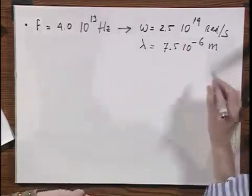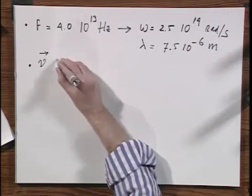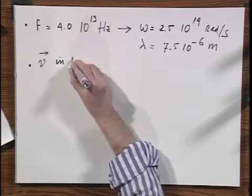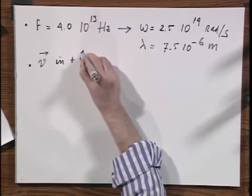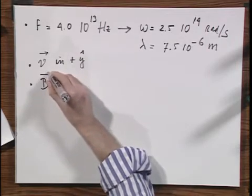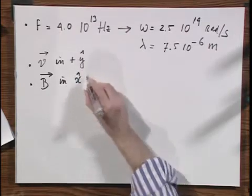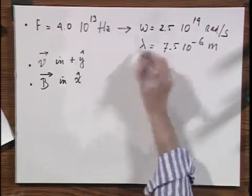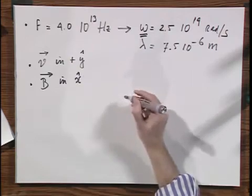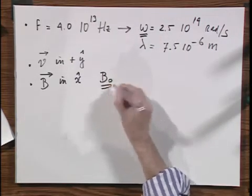We are also being told that the direction of V is in plus Y. And we are being told that the B vector oscillates in the direction of X. Plus, minus, plus, minus, plus, minus, with that angular velocity omega. And you know B zero, whatever that is.